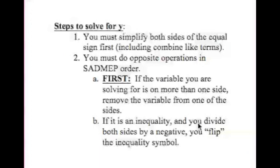Here are the steps to solving for y. First, simplify both sides of the equal sign — that means you can combine your like terms. The second step is to do the opposite operations to get rid of everything but the letter you want. However, if the variable you're solving for is on two sides, you're going to move one of those variables off one side. Also, if it's an inequality, remember that if you divide both sides by a negative, you're going to have to flip the inequality symbol. That's very important.